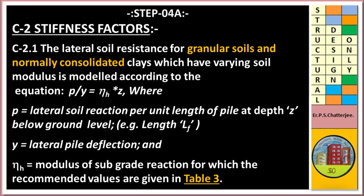Stiffness factor: the lateral soil resistance for granular soil and normally consolidated clay — which have varying soil modulus — is modeled according to the equation P/Y = ηH × Z, where P is the lateral soil reaction per unit length of pile at depth Z below ground level (length EF), Y is the lateral pile deflection, and ηH is the modulus of subgrade reaction. Recommended values are given in Table 3.